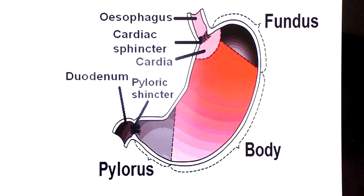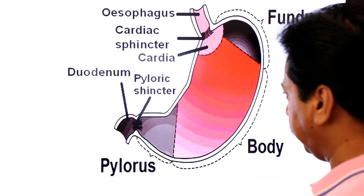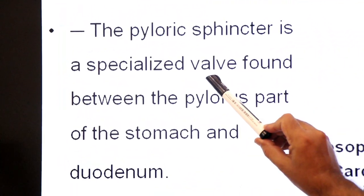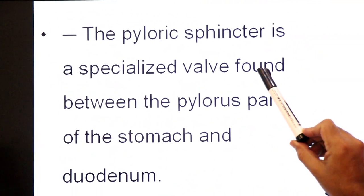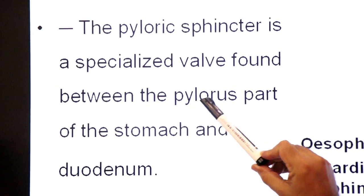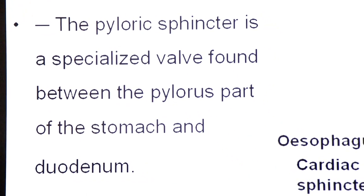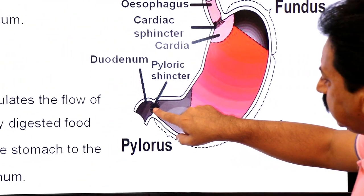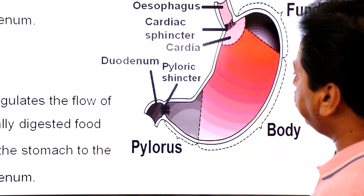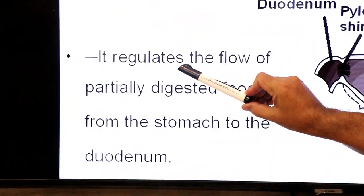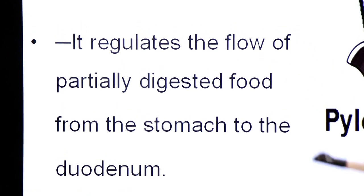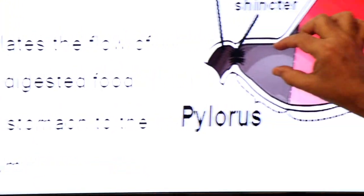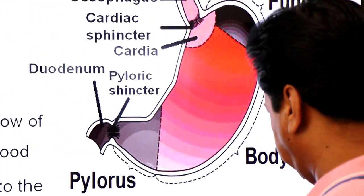Now the pyloric sphincter: it is a specialized valve found between the pylorus part of the stomach and the duodenum. Its function is to regulate the flow of partially digested food from the stomach to the duodenum. Ye control karta hai food ke flow ko pylorus se duodenum mein.